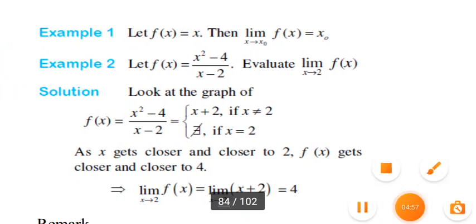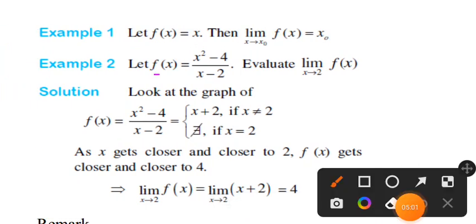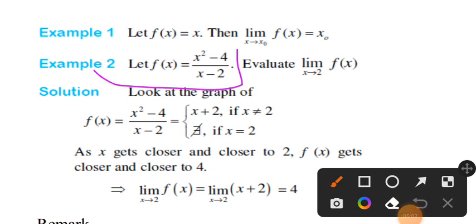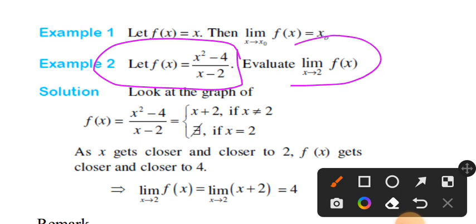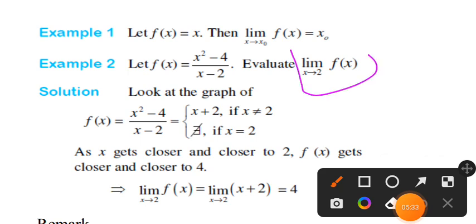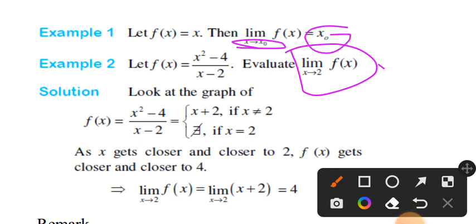Now for another example with limits: let f of x equal x squared minus 4 over x minus 2. We want to find the limit of f of x. We look at the function value — not just evaluating directly — but checking what value the function approaches. We evaluate as x approaches the target value.